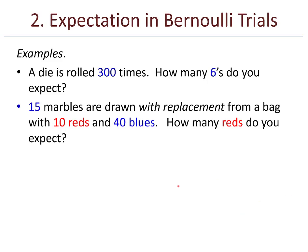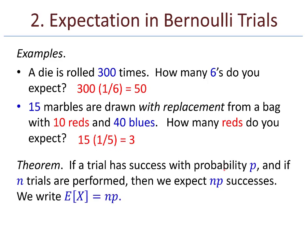In the first example, 300 times 1/6—that's how we approach it. The die is rolled 300 times, and about 1/6 of the time we'll see a 6. That's about 50 rolls out of 300. In the second example, the solution is 15 times 1/5. 1/5 of the time I expect a red will appear. If I draw 15 marbles, 1/5 of that is 3. Here's the general rule: if a trial has success with probability p, and if n trials are performed, then we expect np successes. We write E[X] = np.